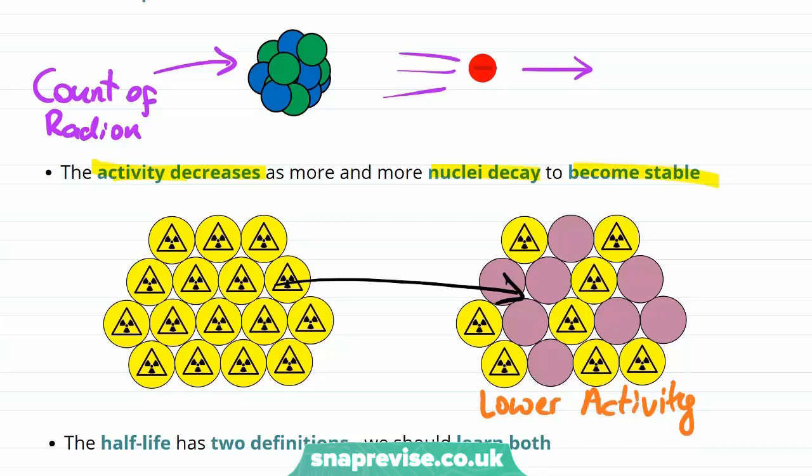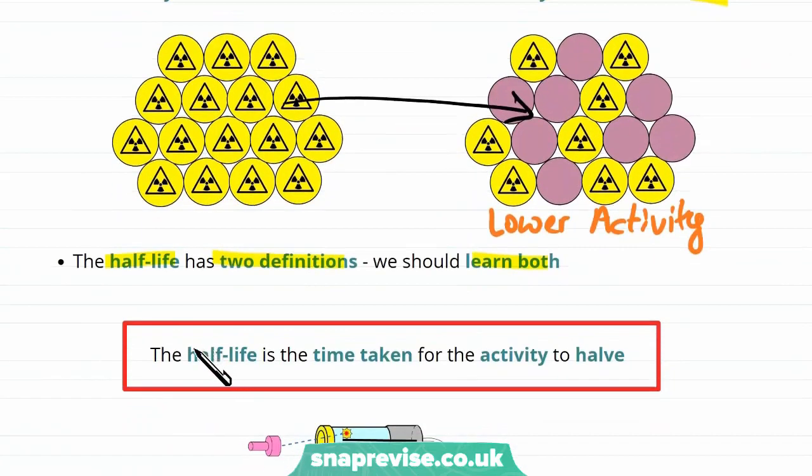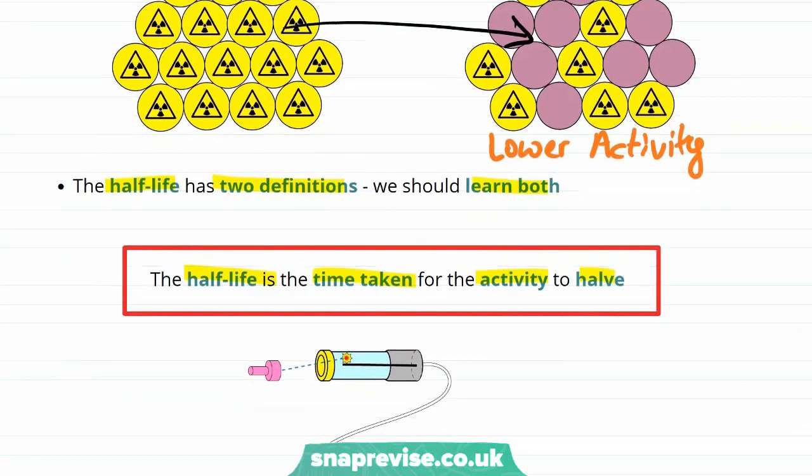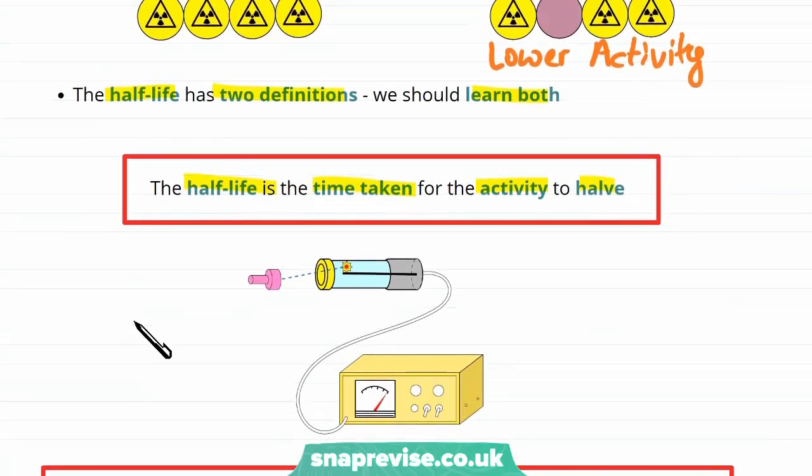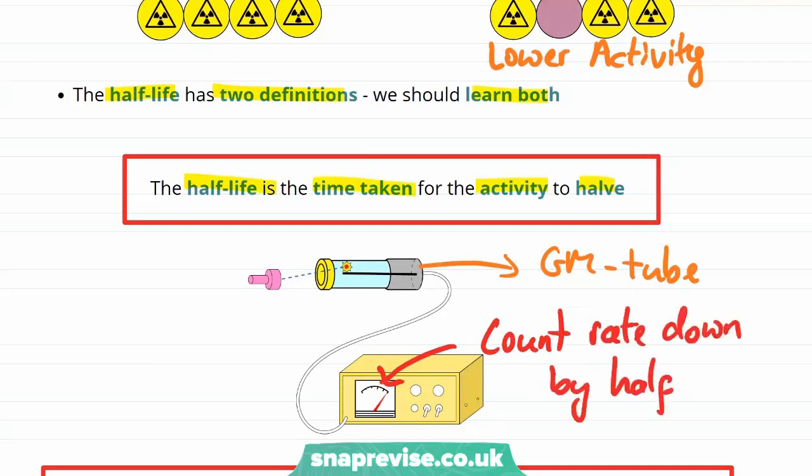This half-life has two definitions and we're going to want to learn both of them. So the half-life is the time taken for the activity to half. So let's say for example that we have a GM tube which is measuring the count rate. Then the half-life is the time taken for the count rate to go down by half. Now this definition is good because it's something that we can easily measure. We take our Geiger-Miller tube and we see how long it takes for the activity to go down by half. There's another definition for the half-life. It's very similar. It's harder to directly measure but it helps us think about what's actually happening.